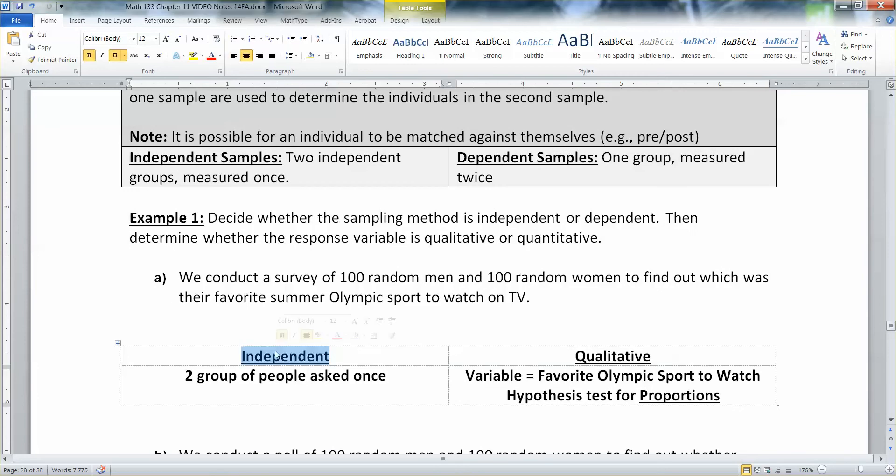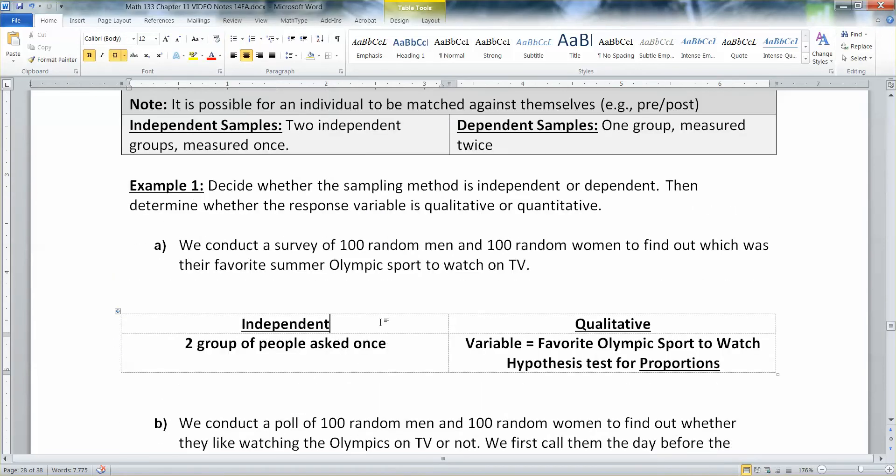So this is independent, right? These two groups have no bearing on each other. They're just 100 random men and women. If they were husbands and wives, that would be different. Then they'd be dependent. But they're not husbands and wives. So you're going to stick with independent. That's two groups of people that are asked one time. And you want to see, do men and women like different things? Do they watch different sports? One might imagine that they do.